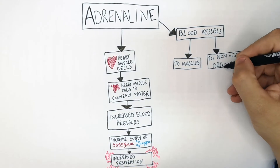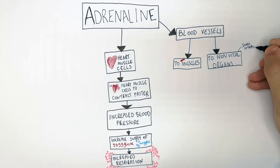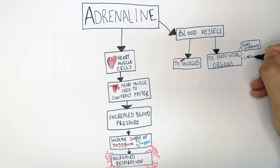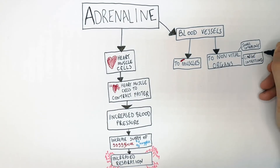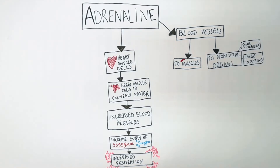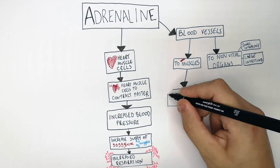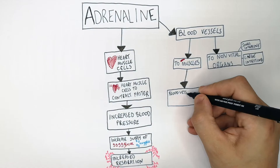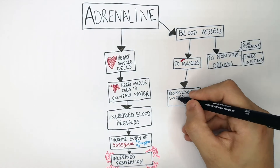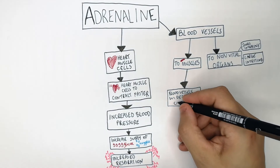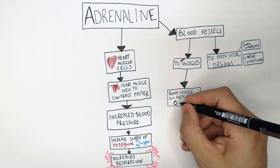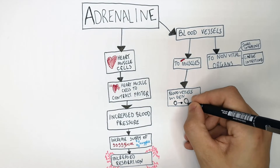Your blood vessels to your small intestine and large intestine are two examples of non-vital organs. To the muscles, the blood vessels will widen, increasing blood flow to the muscles.